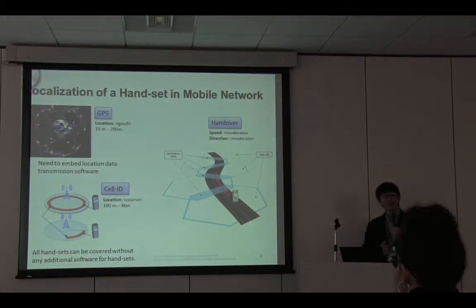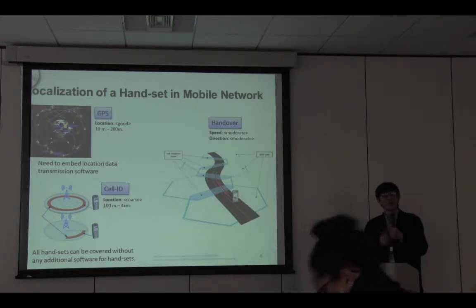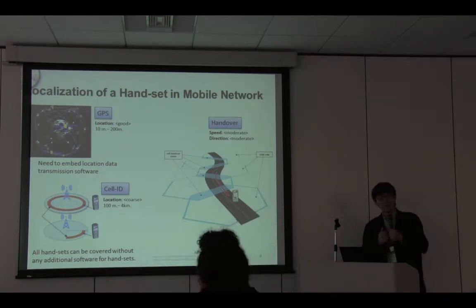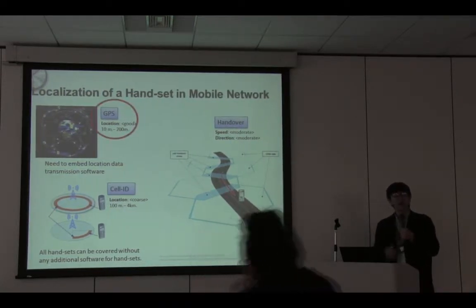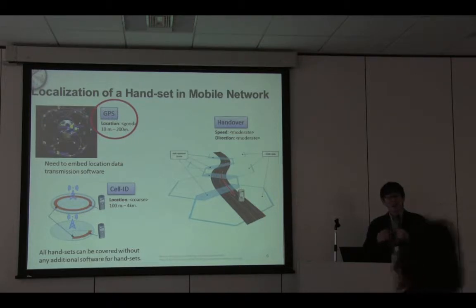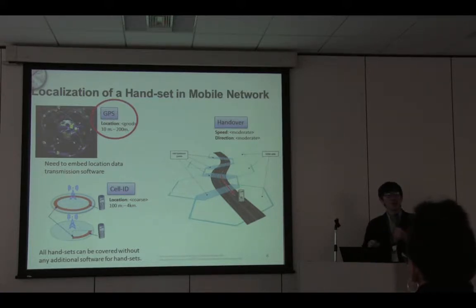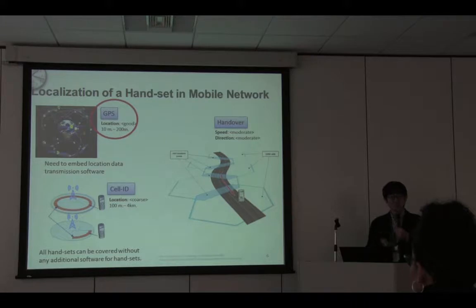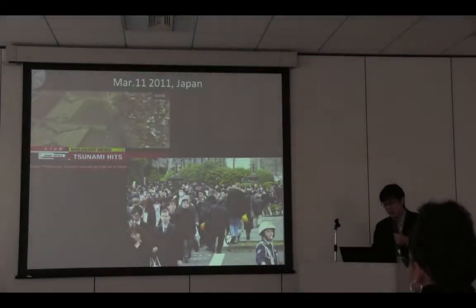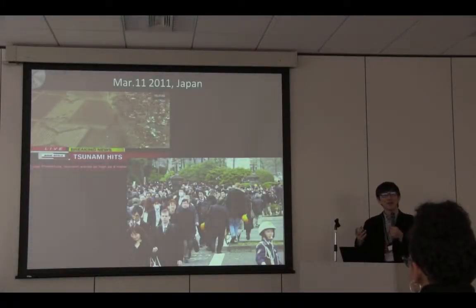Nowadays, GPS on smartphones and mobile devices is becoming cheaper and cheaper. In Japan, from 2007 the government put in a regulation that every cell phone handset should be equipped with GPS for emergency calls. Navigation services based on mobile phones became much more popular. By collecting such data, we can visualize how people move or behave in the case of disasters.